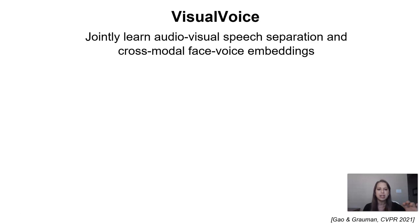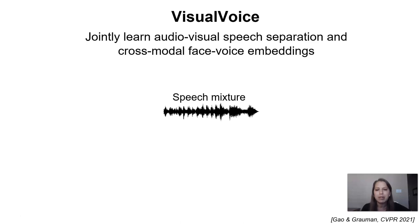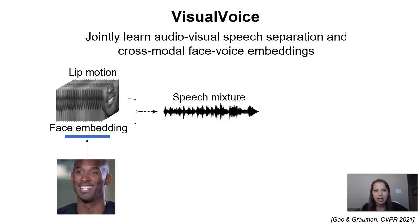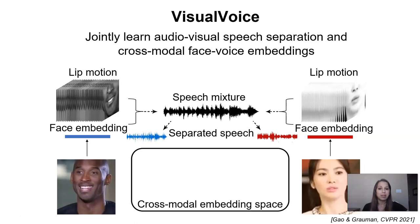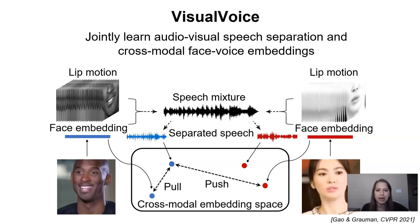We'll jointly learn to do separation as well as form these cross-modal embeddings. That means we'll be able to take mixtures of speech — a waveform with multiple overlapping voices — and model both the lip motion and the facial appearance of each speaker to separate the speech for both of them. At the same time, learning the association of their face and their voice will assist in this separation process.